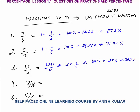13 by 16: we can break this as 12 plus 1 by 16. Now 12/16 simplifies to 3/4, and we still have 1/16. We know 1/4 is 25%, so 3/4 is 75%. And 1/16 is 6.25% as discussed in the previous class. So the answer is 81.25%.